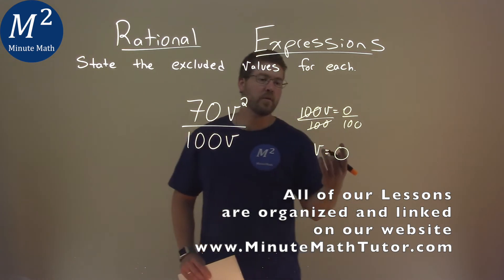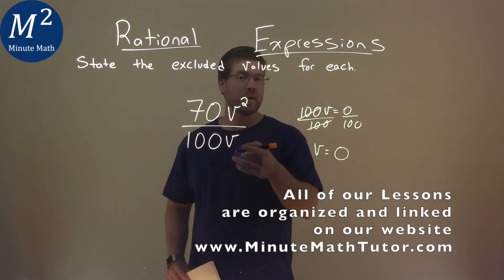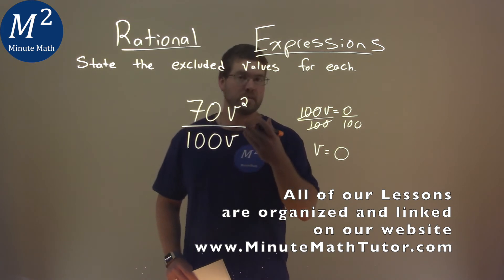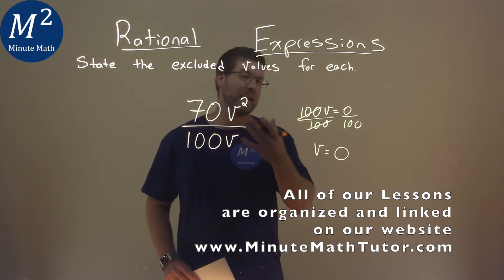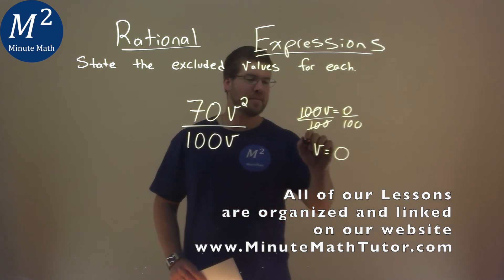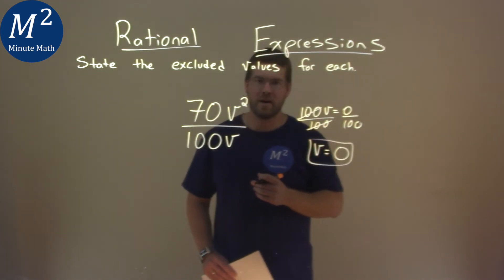So the value of zero for v, when plugged into our denominator, makes our denominator zero, meaning we cannot divide by zero, and so zero is our excluded value.